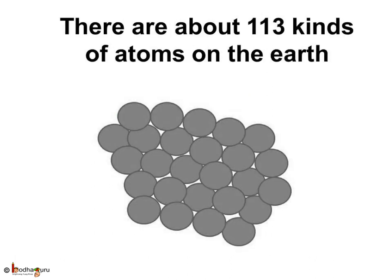You may think, if there are two types of atoms in a molecule of water, then there must be millions of kinds of atoms present in the universe because there are so many things. What you think is right, but it is not exactly like that. It will sound very strange, but there are about 113 kinds of atoms on the earth. By combining these atoms in different ways to form different molecules, we can make all the things in the universe.